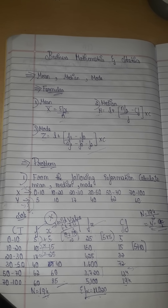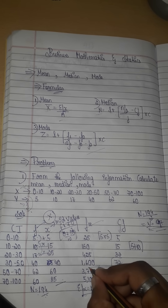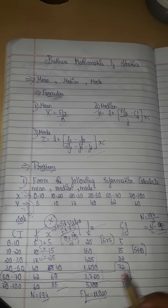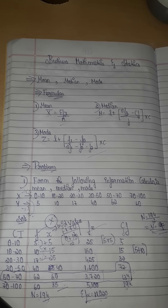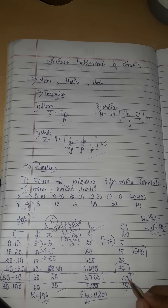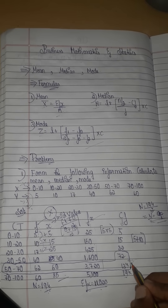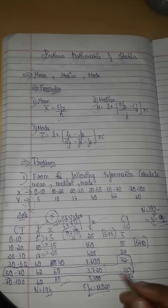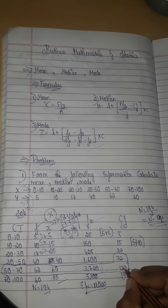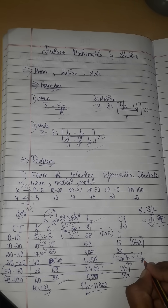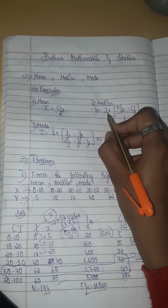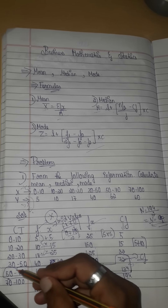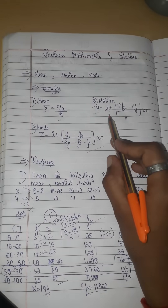We identify the median class by finding where 97 falls in the cf column. We start with the cf column and locate the class where 97 falls. The lower limit L is 50, and the class interval is 50 to 70. So n by 2 is 97, and we find the corresponding L, f, cf, and c values.